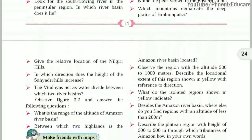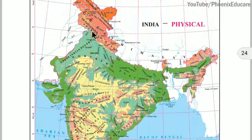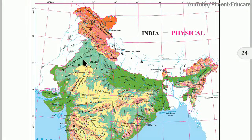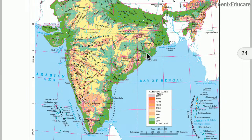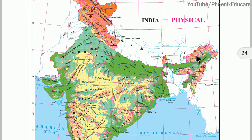Looking at the physiographic divisions of India, we have Himalayan mountains in the north, northern plains, the Great Indian Desert, the plateau or peninsular region, coastal plains, eastern ghats, and mountains called Satpura and Vindhyas. We also have the Aravali mountain and the Thar Desert, also called Marusthali. These are the various divisions of India.